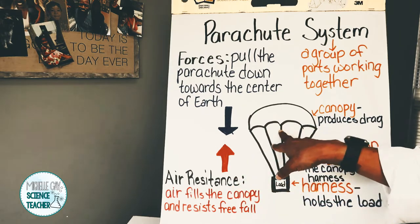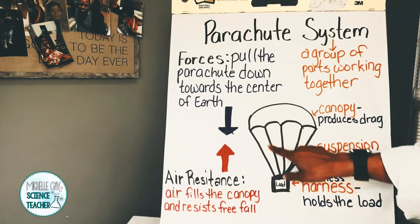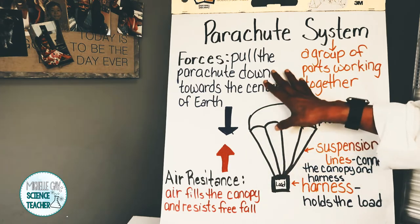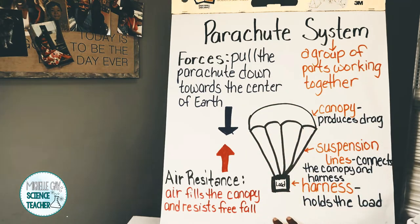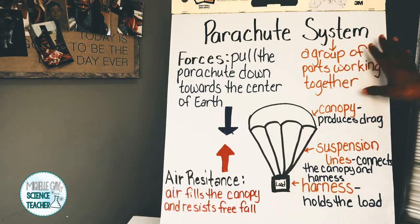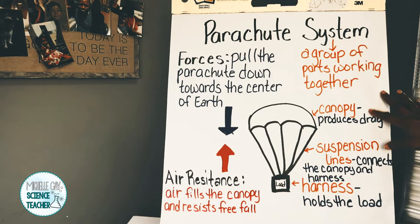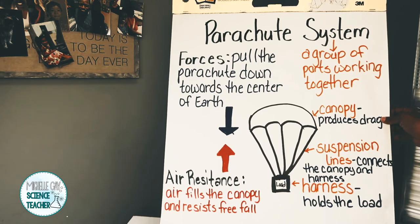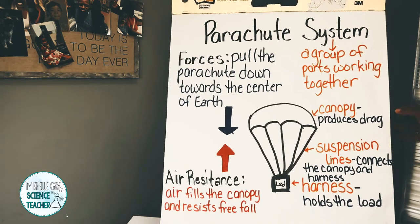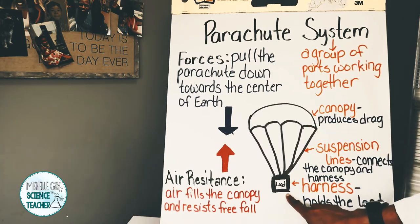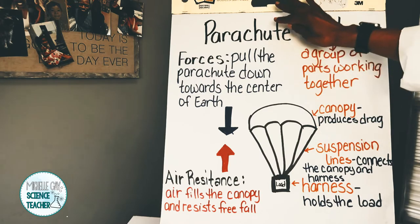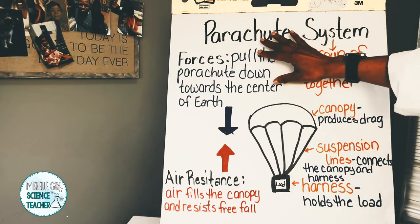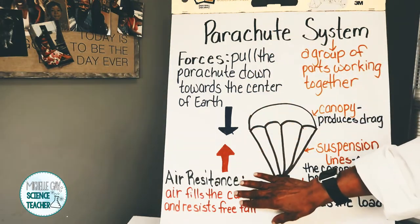Because air is moving through the suspension lines, it is able to slow the parachute down as it's landing. The parachute has three parts: the canopy, which produces the drag; the suspension lines, which connect the canopy to the harness; and the harness, which holds the load. The two forces working together are gravity and air resistance.